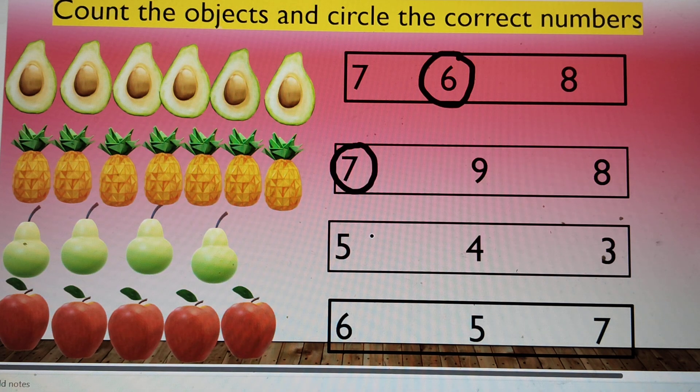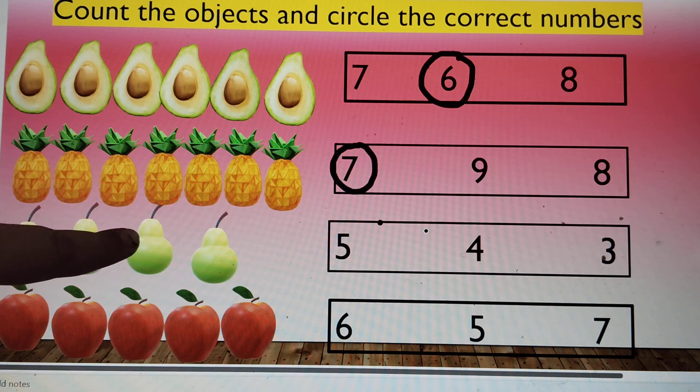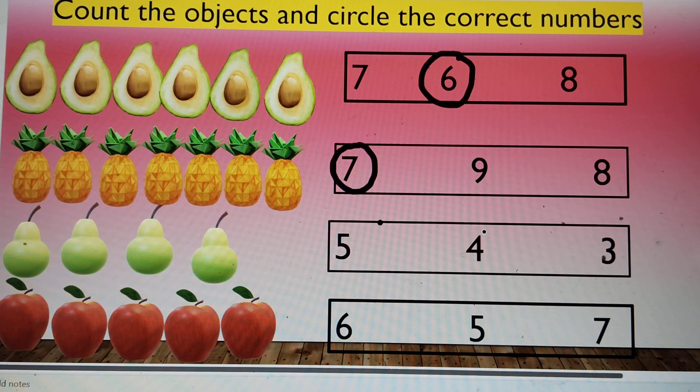How many pears do you see here? One, two, three, four. Four pears.